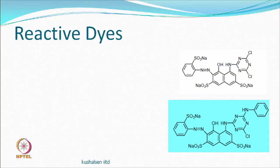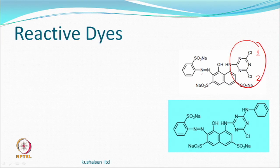Regarding reactive dyes, we discussed one reactive group with 2 chlorines — this is called the dichlorotriazine type of reactive dye, with the chromophore located elsewhere. This type of dye is not good for printing because it is more reactive; we prefer dyes which do not react at room temperature and require 60 to 80 degrees for fixation.